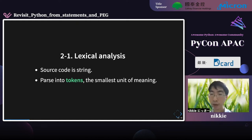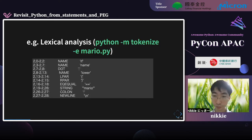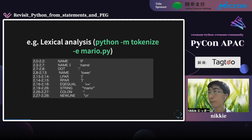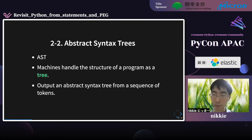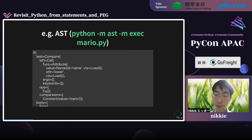Source code is a string. In lexical analysis, machines parse source code into tokens — a token is the smallest unit of meaning. For lexical analysis, you can use the standard Python library 'tokenize.' Here is the result of tokenizing the if statement. Next, let's look at abstract syntax trees, also called AST. Machines handle the structure of a program by representing it as a tree, outputting an abstract syntax tree from a sequence of tokens. AST can be created using the 'ast' module from the standard library.